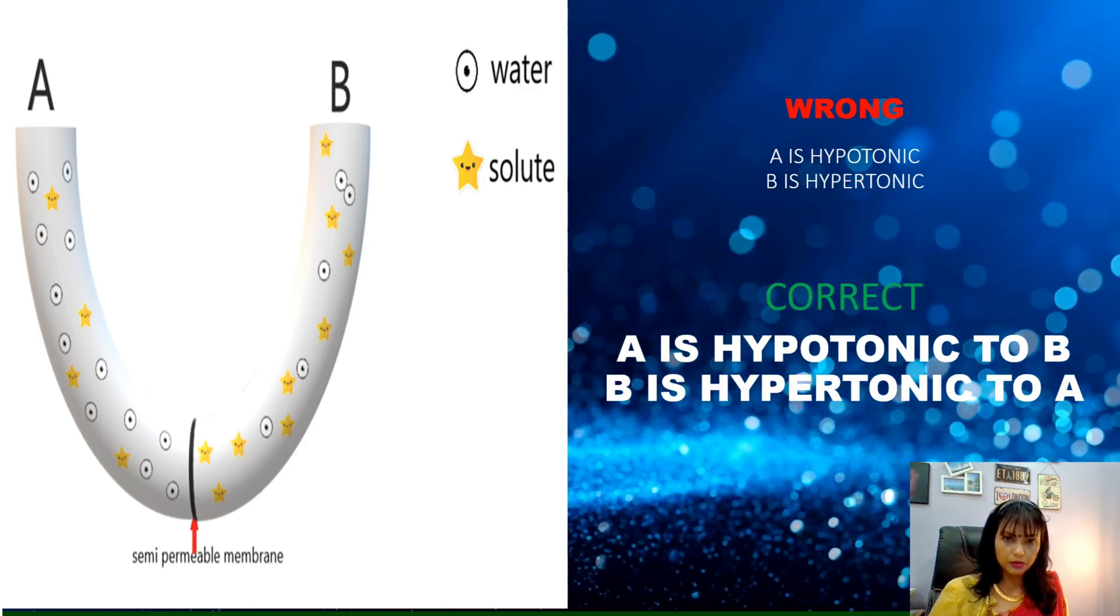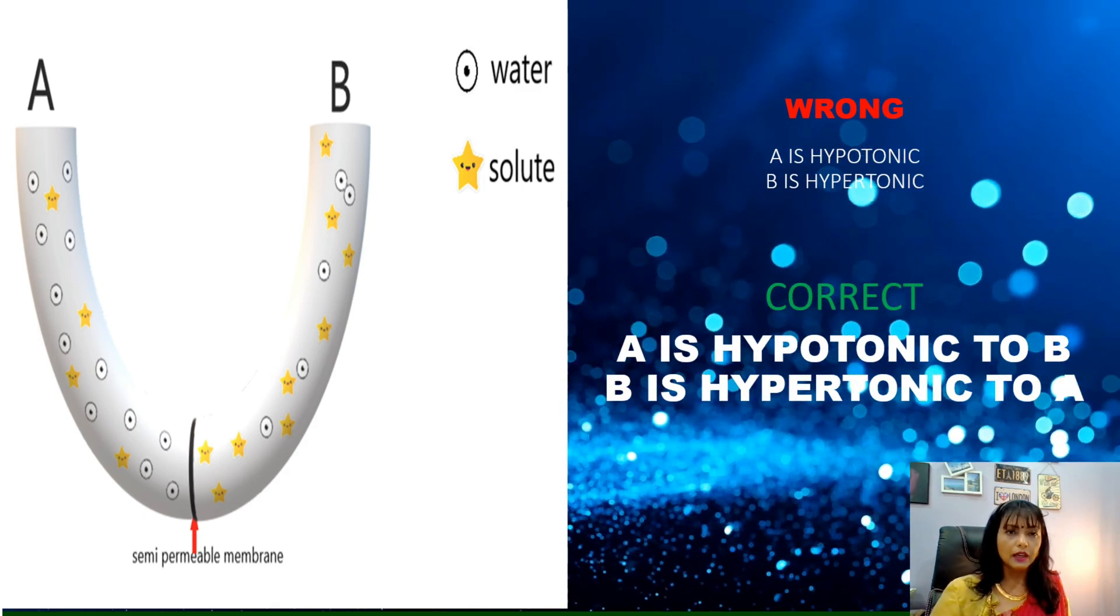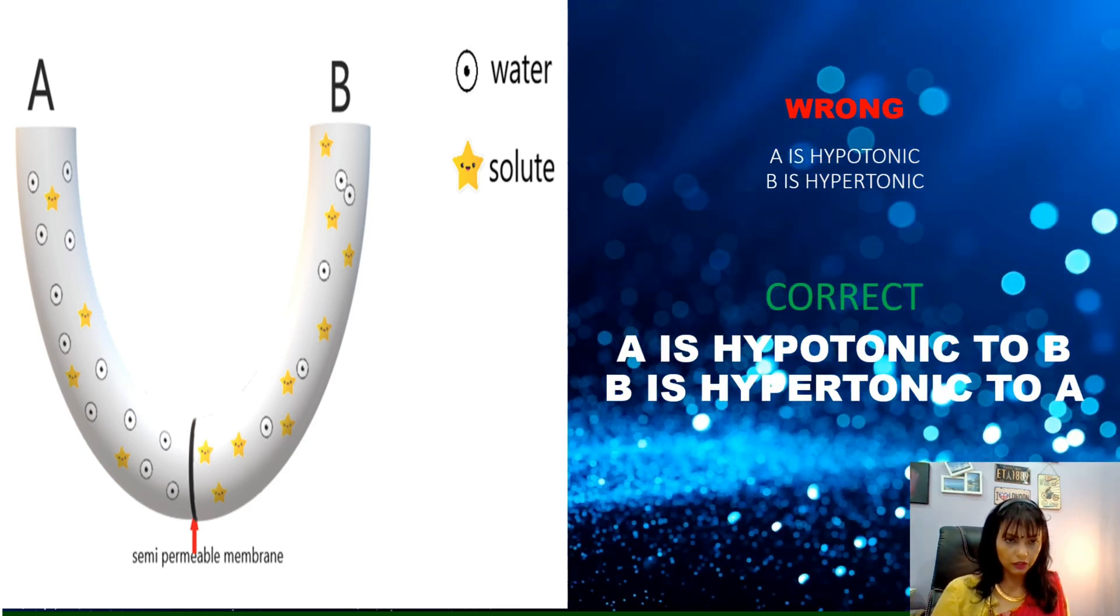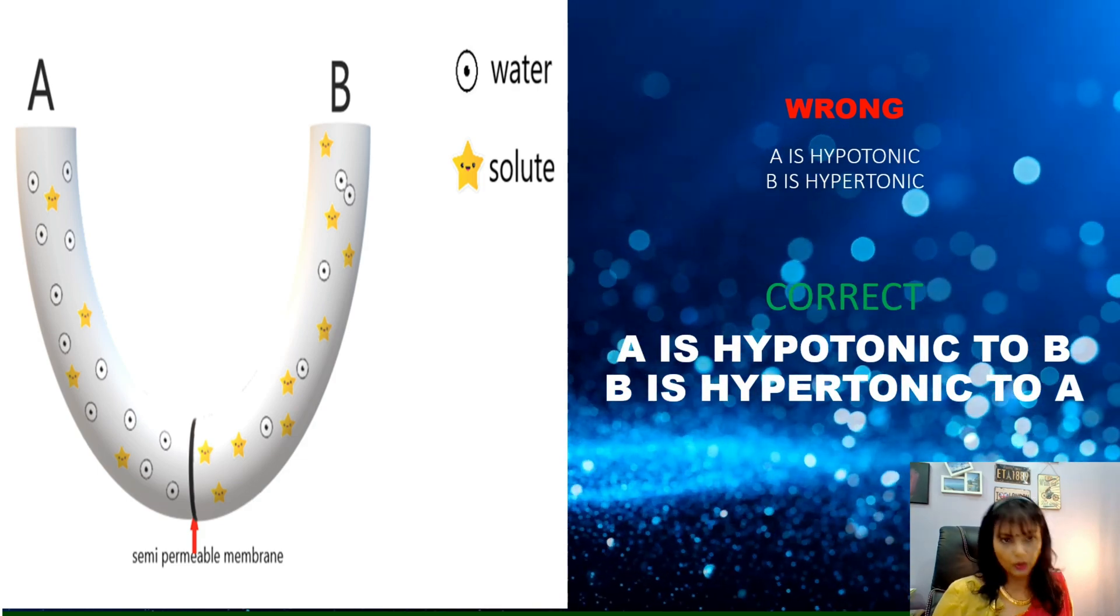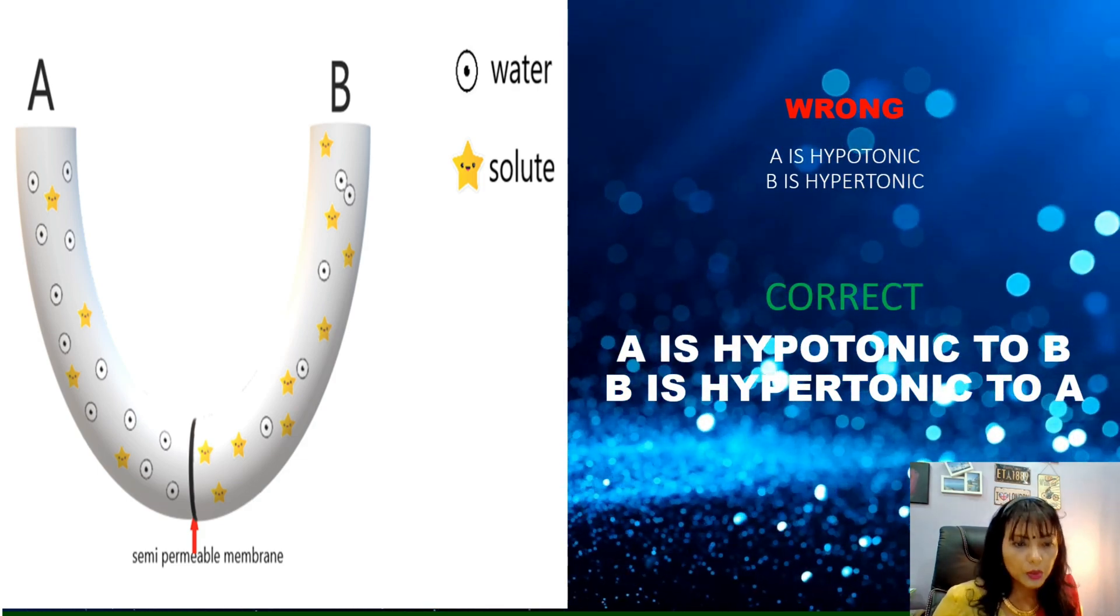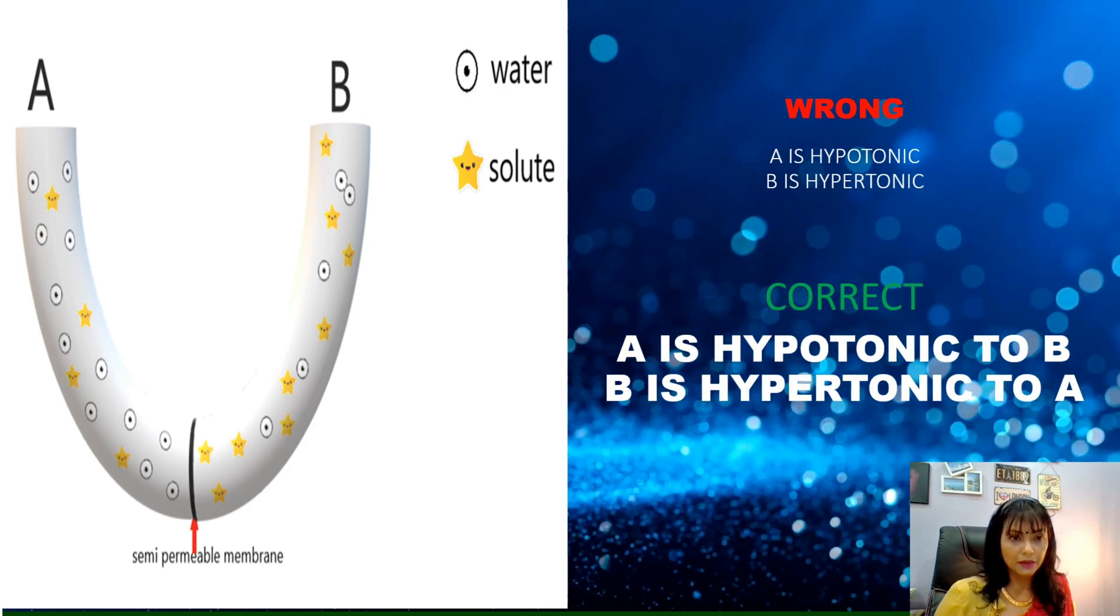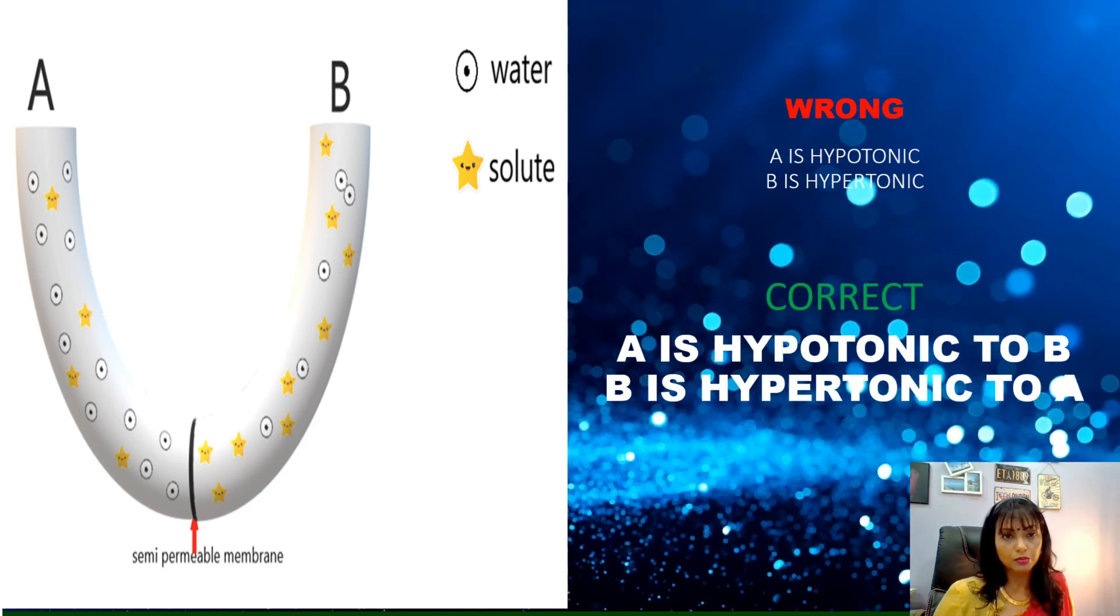As you all know that osmosis, when you're defining osmosis, it is defined as the diffusion of water molecules from high water concentration to low water concentration through a semi-permeable membrane. So, a system must have a semi-permeable membrane in order for the osmosis to occur.